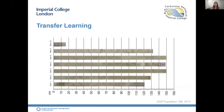For the past year I've been investigating the ability of machine learning — specifically deep neural networks — to classify carbonate rock facies according to the textural Dunham classification scheme, using a method called transfer learning. I'm going to give you a quick introduction to transfer learning and how we're applying this technique to the world of carbonates.